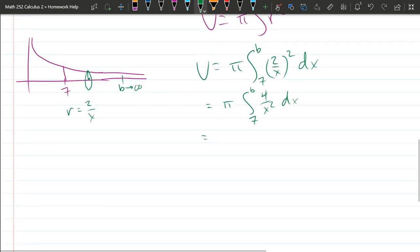And let's see. I'm gonna write this as four x to the negative two. Might as well take our four outside the integral. So we got four pi integral seven to b dx.